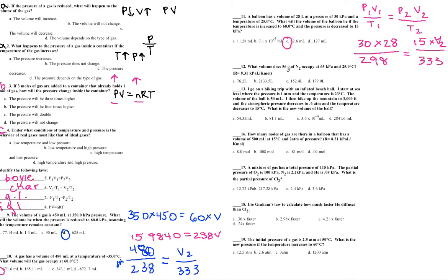What volume does 56 grams of N2 occupy at 65 kPa and 25°C? I'm given R, grams, and single conditions — not changing anything — so this is the ideal gas law: PV = nRT. I need to convert 56 grams of N2 into moles. The molar mass of N2 is 28 g/mol, so 56 ÷ 28 = 2 moles.